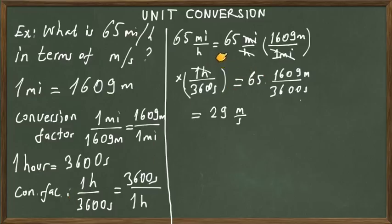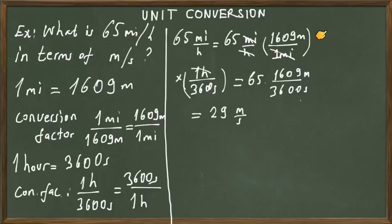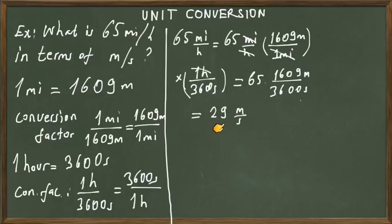When we write down all these numbers and carry out the multiplication, miles cancel out and we are left with meters; hour cancels out and we are left with seconds. So in the end we are left with meters per second. The result is 65 multiplied by 1609, divided by 3600, which gives 29 meters per second. So 65 miles per hour equals 29 meters per second in the SI unit system.